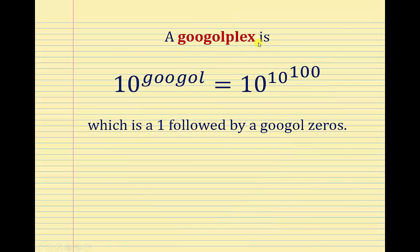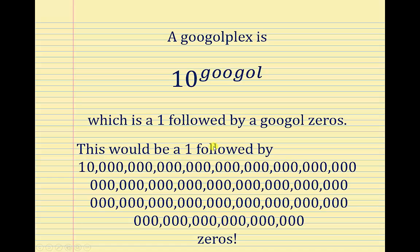And finally, a googolplex is 10^googol, which would be 10^(10^100), which would be 1 followed by a googol zeros. This means it would be 1 followed by—again, here's a googol—so we'd have this many zeros to the right of a 1, which obviously would be way too large to write out.